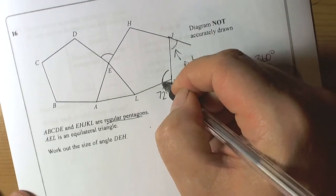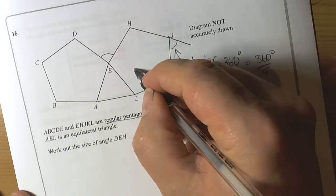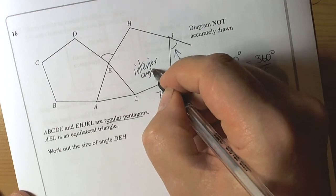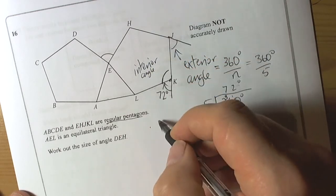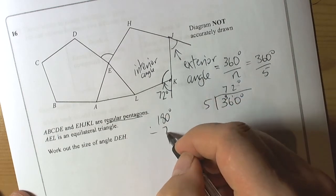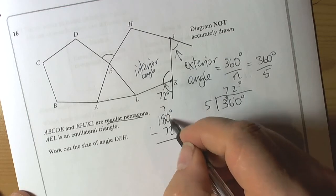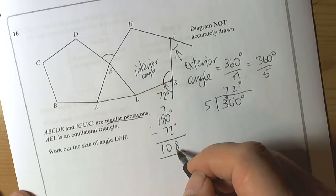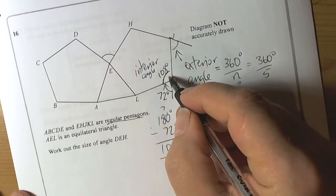These two angles here meet at a point on a straight line. This is known as the interior angle of a polygon. Those two angles must add up to 180 degrees. So we've got 180 subtract 72 degrees. 10 take away 2 is 8, 7 take away 7 is 0, 1 take away nothing, so 108 degrees. We know the interior angle is 108 degrees.